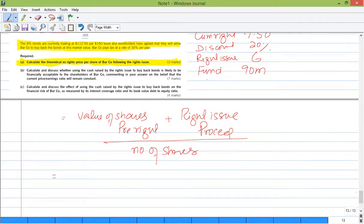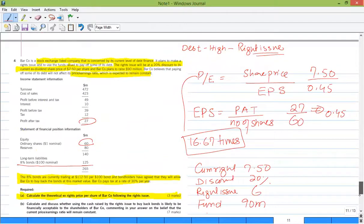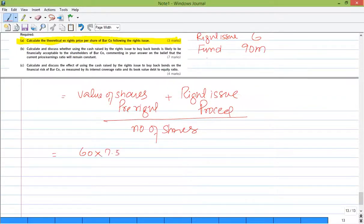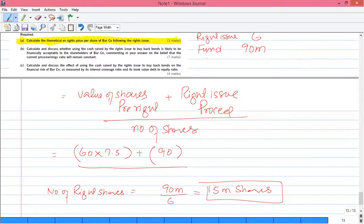So how many number of shares do we currently have? 60 million. We have number of shares and the current price is 7.5. And how much proceeds will come from right issue? 90 million. We are going to use this procedure to buy back bonds. So the number of shares after right issue. How many shares will be issued for 90 million? The price of 90 million is 6. So that means we have 15 million shares. And then there will be 75 million shares.